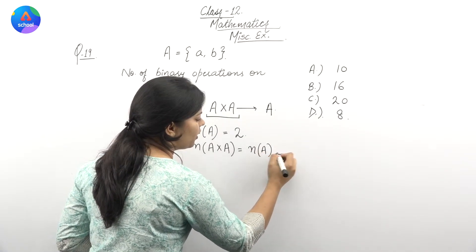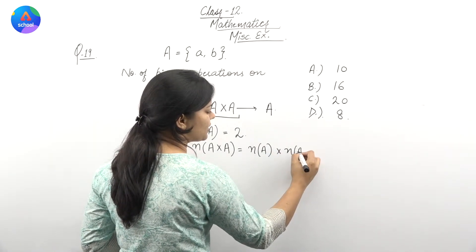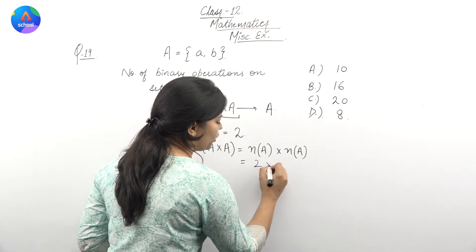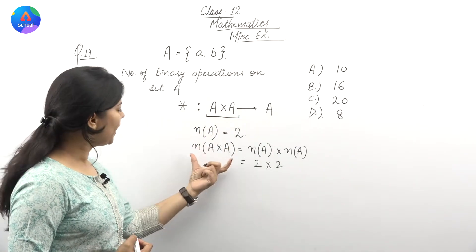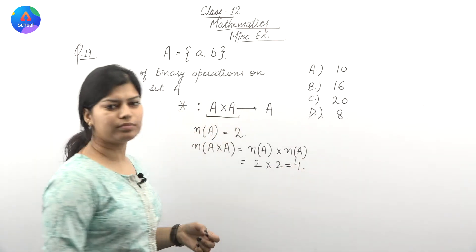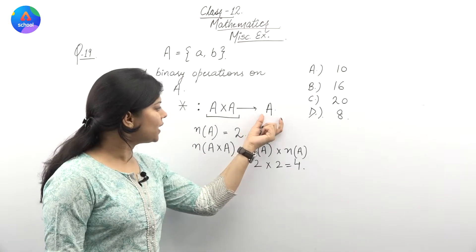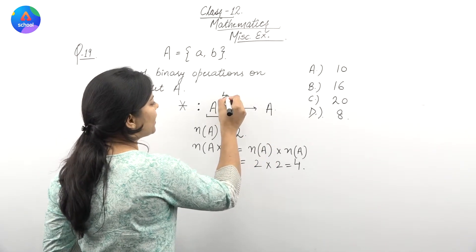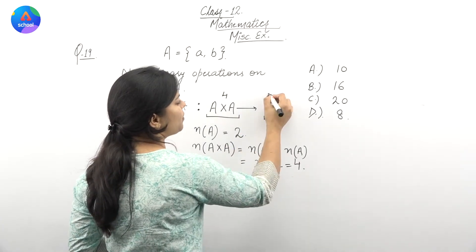When we talk about Cartesian product, we have seen A cross B. For Cartesian product, how many elements will we find? n(A) multiply n(B), that is number of elements in first set into number of elements in second set. Here the second set is also A, so 2 into 2. This domain has 4 elements.